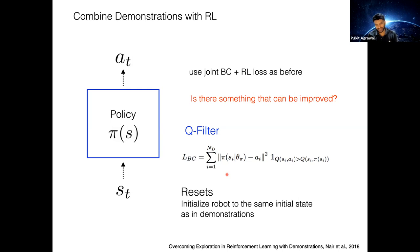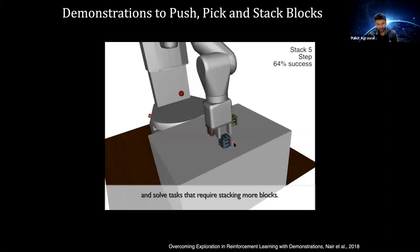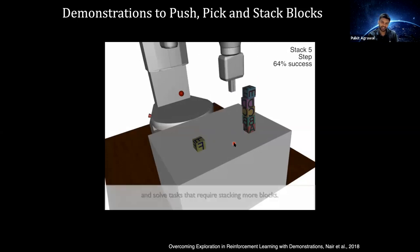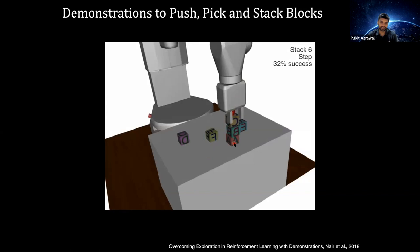A second thing they did was resets: starting the robot from the same states as in the demonstrations. This is hard to implement in the real world because matching the robot's state to the expert's state is difficult. But the key takeaway from this work is the Q-filter idea — helping decide when to use the behavior cloning loss and when to trust the RL loss. Using this, they can solve hard tasks like stacking five or six blocks, which is quite challenging due to hard exploration.